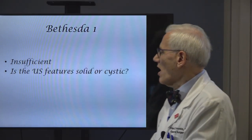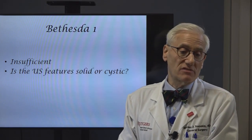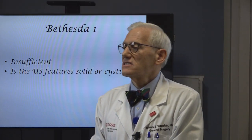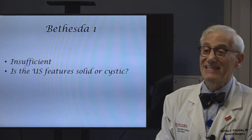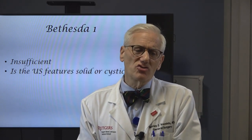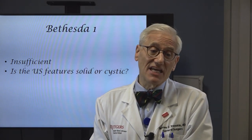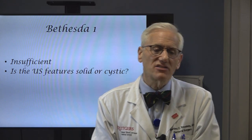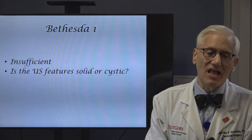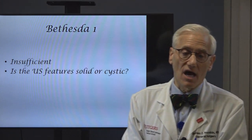Bethesda 1 means there are no follicular cells — insufficient. If it is solid on ultrasound, we're going to operate. If it's cystic or partially cystic and solid, I usually recommend that we follow it and see what happens to the solid components. If they decrease, it's a degenerating nodule — it's not cancer. If the solid component increases, we'll do another biopsy. If it's totally solid and we can never get a needle in and get out cells, we're never going to get an answer with a fine needle biopsy — that means an operation.